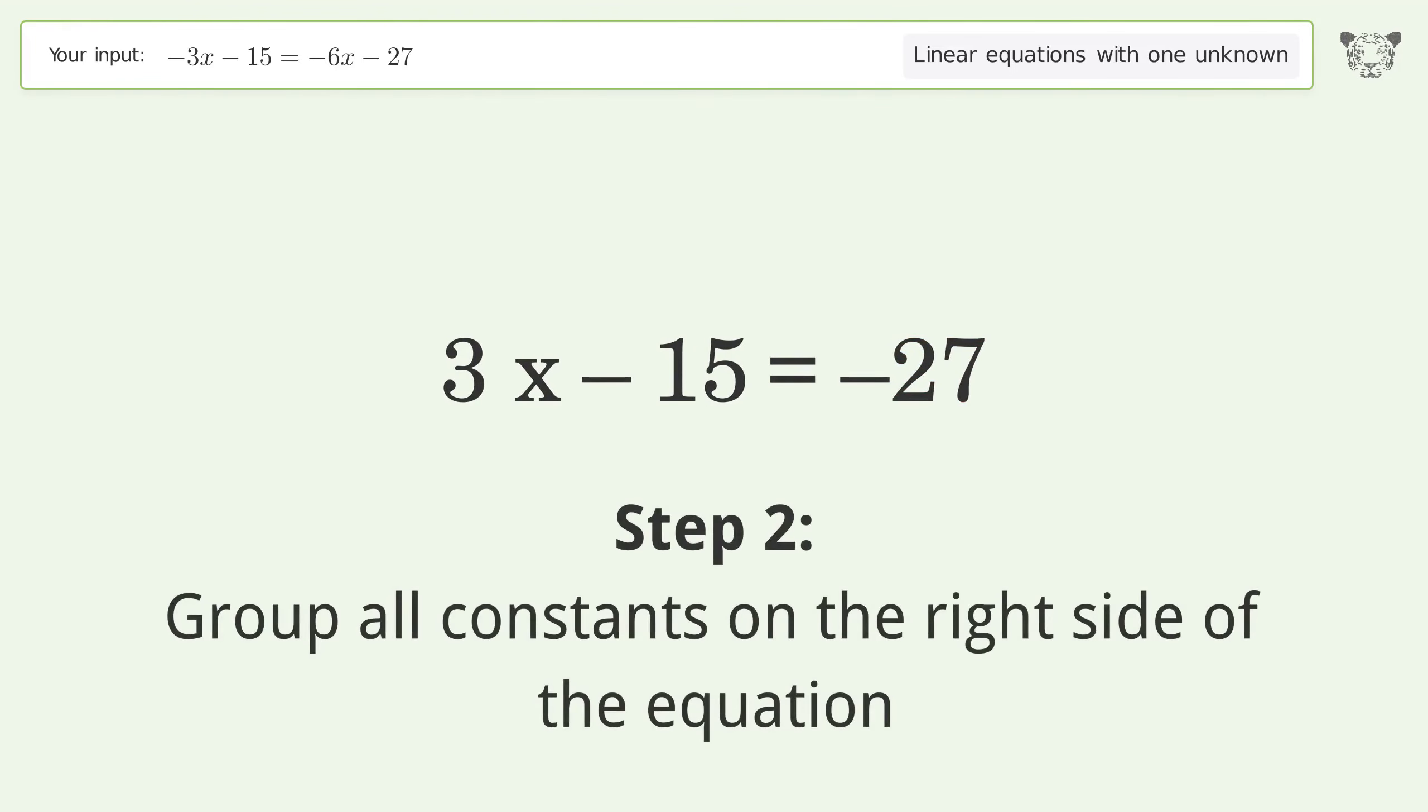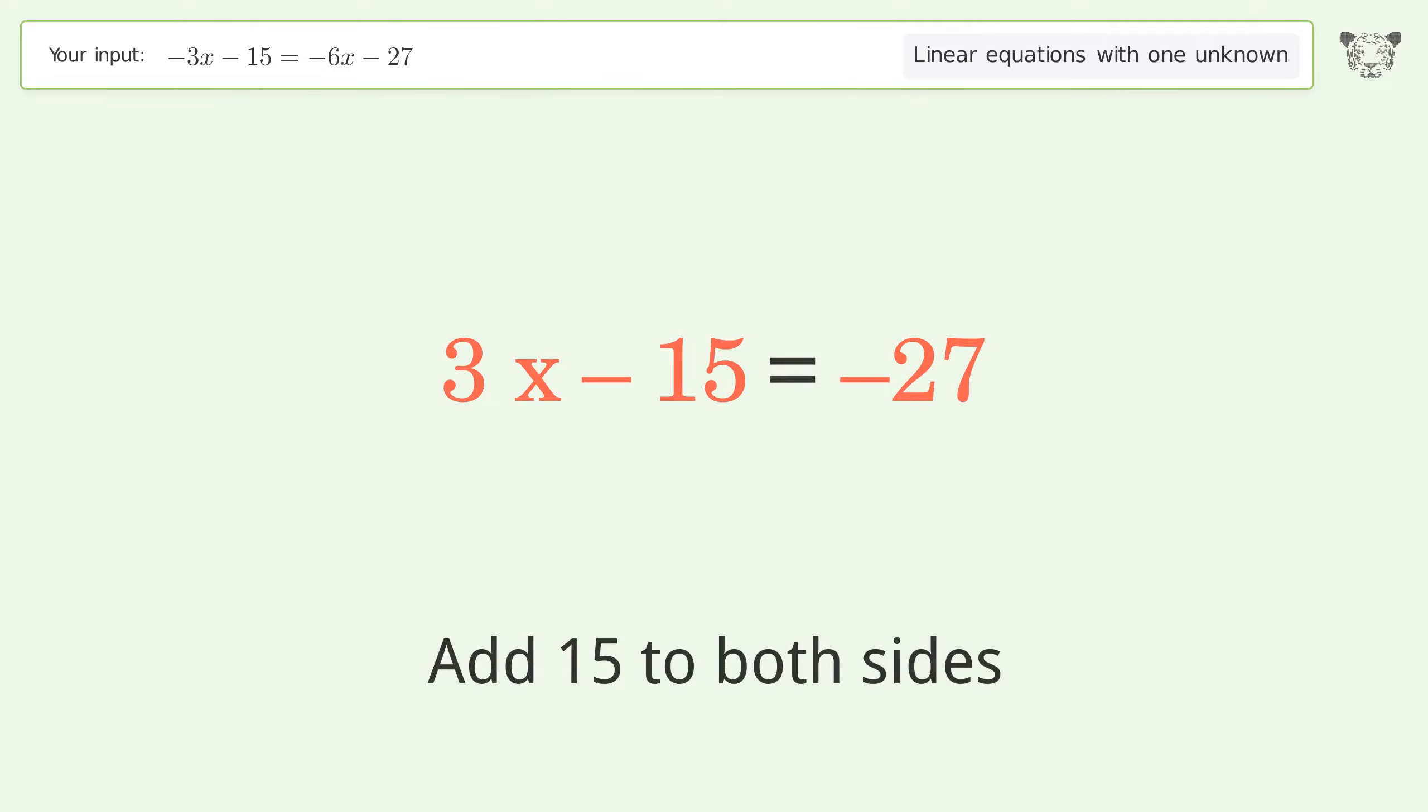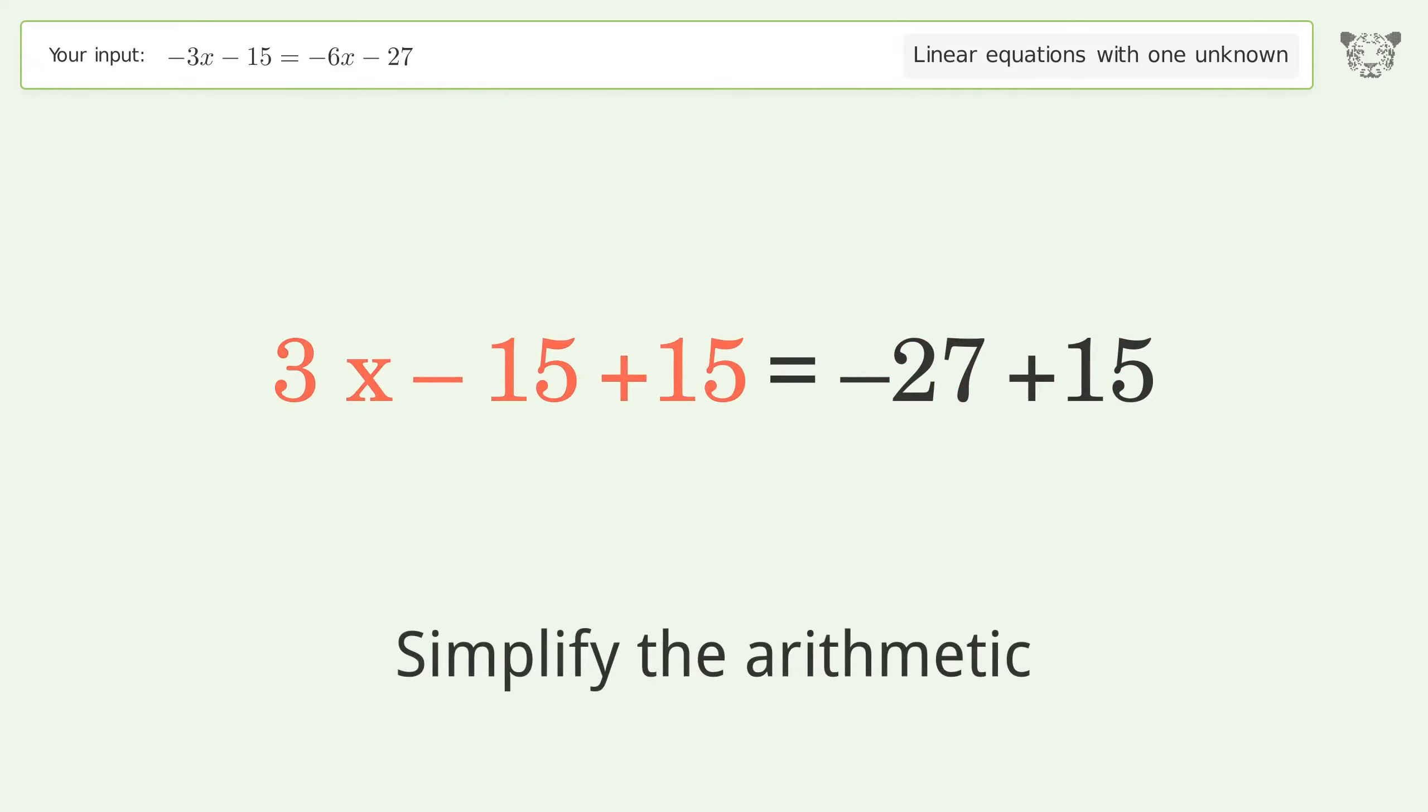Group all constants on the right side of the equation. Add 15 to both sides. Simplify the arithmetic.